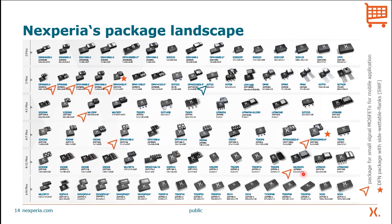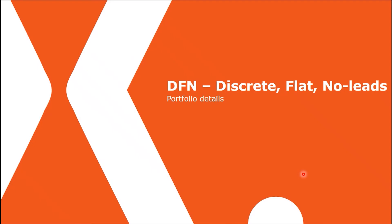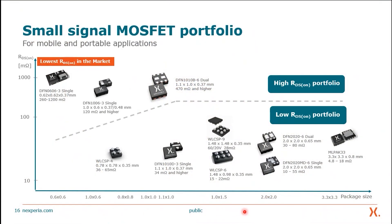DFN stands for Discrete Flat No-leads. On the graph you can see the package dimension from smaller to bigger packages on the x-axis, and the RDS-on from lowest to higher values on the y-axis. Our DFN package comes with a low RDS-on, but compared to wafer level chip scale it is relatively high. As you go up in DFN package size, the RDS-on decreases. To achieve even lower RDS-on, you need a certain package size.